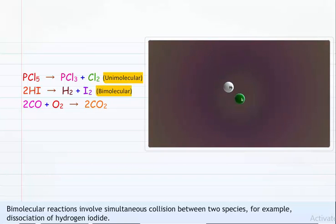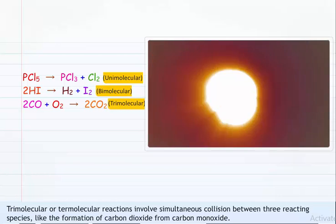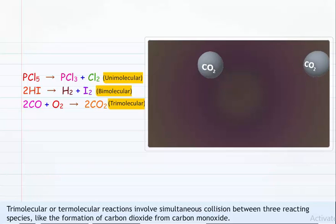The dissociation of hydrogen iodide involves simultaneous collision between two species and is termed a bimolecular reaction. The formation of carbon dioxide from two molecules of carbon monoxide and one molecule of oxygen involves simultaneous collision between three reacting species. Such reactions are called trimolecular or termolecular reactions.